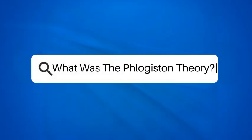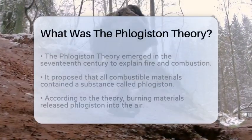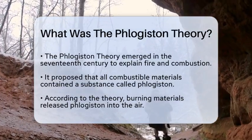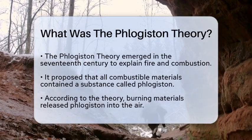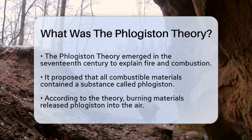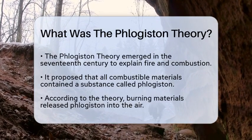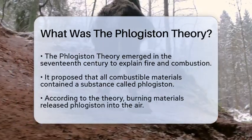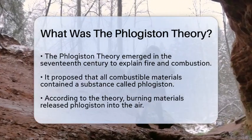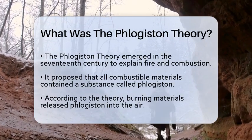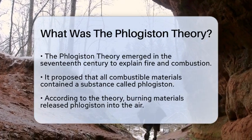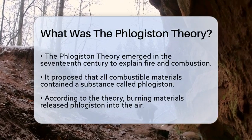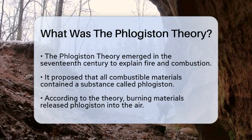What was the phlogiston theory? Imagine a time when the very nature of fire and combustion was a mystery. Scientists and thinkers sought to understand why materials burned and what happened during this process. In the 17th century, a theory emerged that attempted to explain these phenomena — the phlogiston theory. This theory proposed that all combustible materials contained a substance called phlogiston.